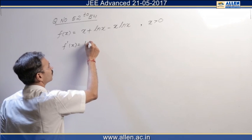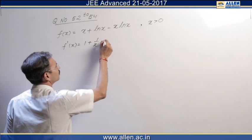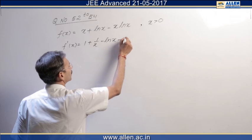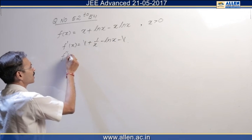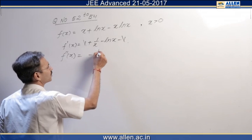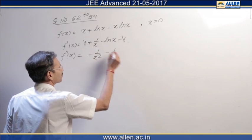We will differentiate the function 1 plus 1 upon x minus ln x minus 1 and f double dash x comes to be minus 1 upon x square minus 1 upon x.